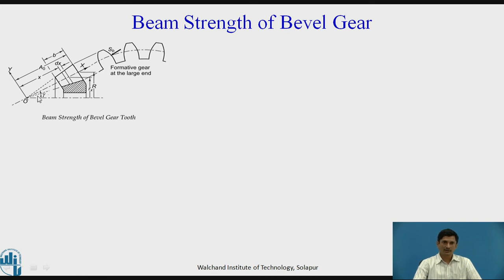Now let us see a bevel gear. This is the part of a bevel gear we have considered. Here, this is the pitch angle gamma. This R represents D by 2, or it is the radius at the larger end of the tooth, pitch radius at larger end of the tooth. A0 is cone distance, B is the face width. We have considered a formative spur gear at the larger end.